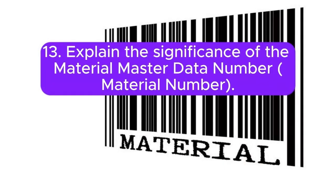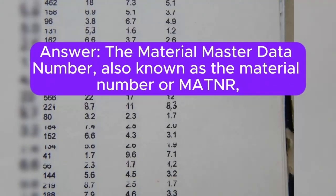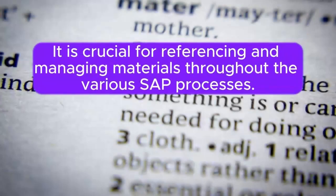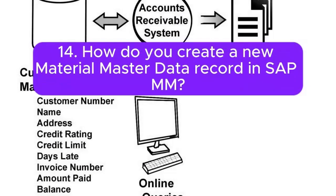Question 13: Explain the significance of the Material Master Data number (Material Number). The Material Number, also known as MATNR, is a unique identifier assigned to each material in SAP. It is crucial for referencing and managing materials throughout the various SAP processes.